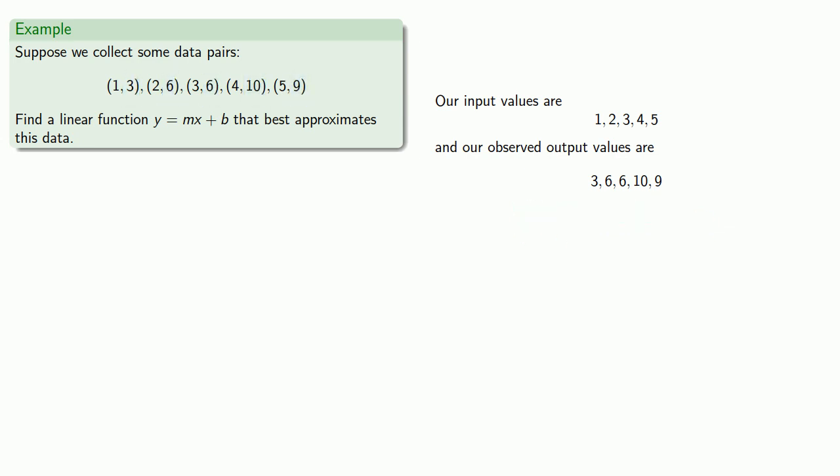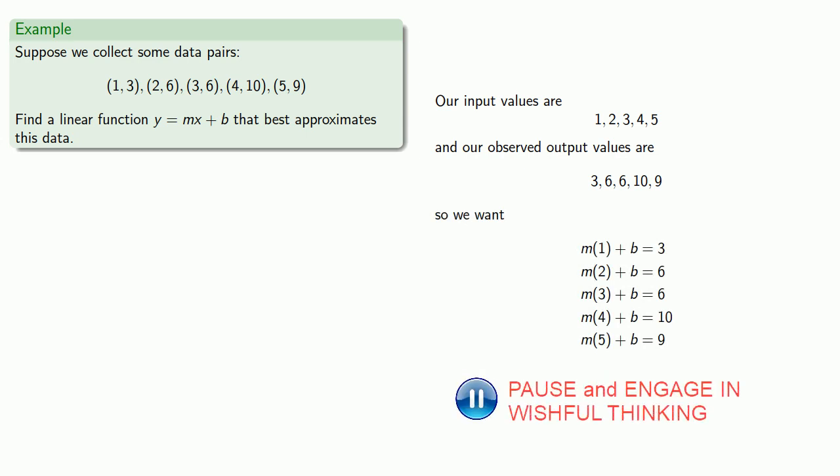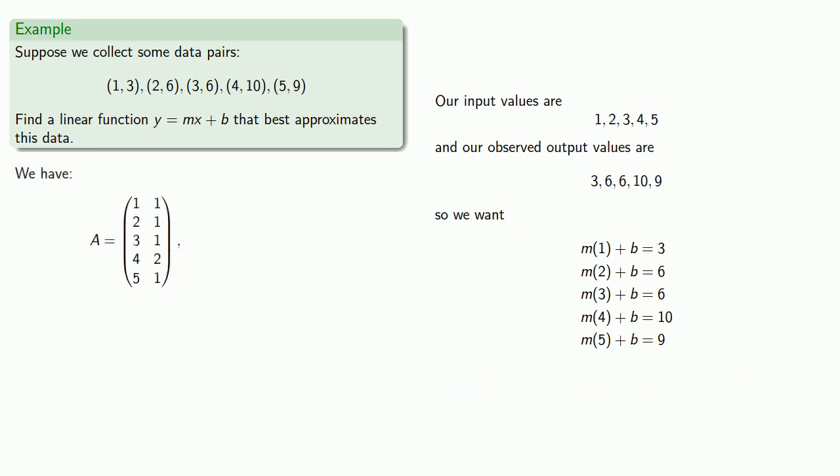And in a perfect world, we want the linear function to give us exactly these output values. And so we'll peel off our coefficient matrix A, our matrix of variables X, and our matrix of constants B.